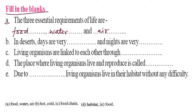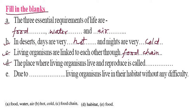Now the second fill-in-the-blank: in the desert, days are very hot and nights are very cold. Third: the place where living organisms live and reproduce is called their habitat. Next, due to adaptation, living organisms can live in their habitat without any difficulty. The answer for that blank is: food.